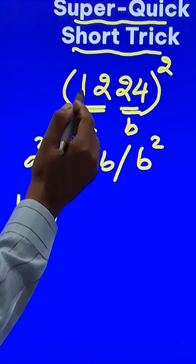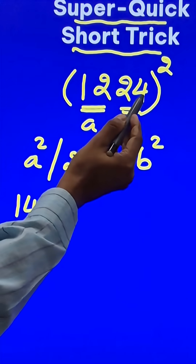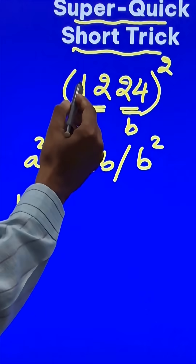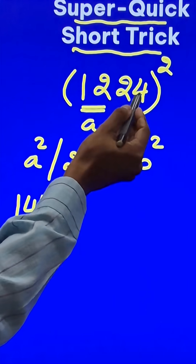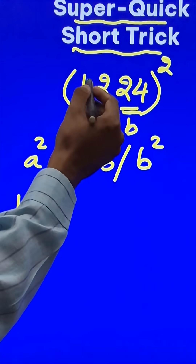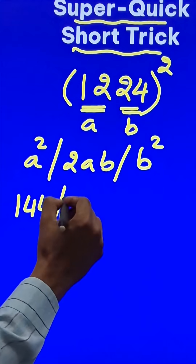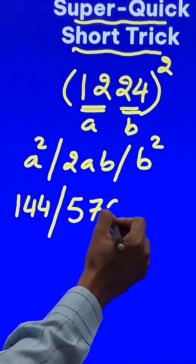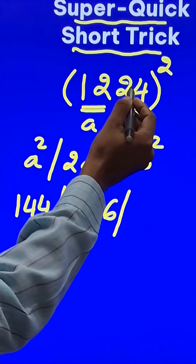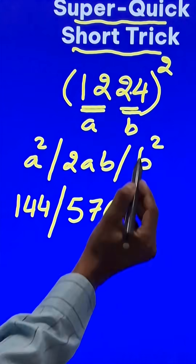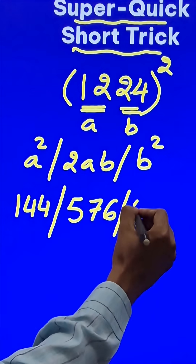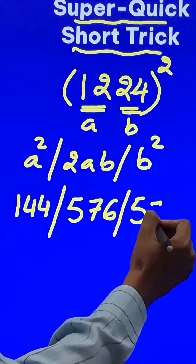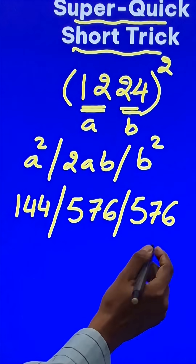2ab — when you multiply 24 and 12 you get 288, and double of 288 is 576. And finally, b square — b is 24, and 24 square is again 576.